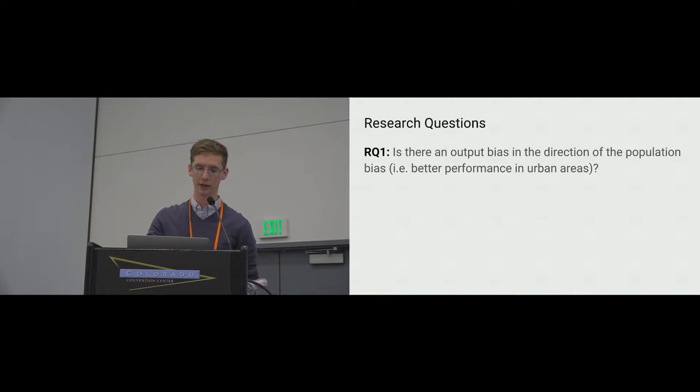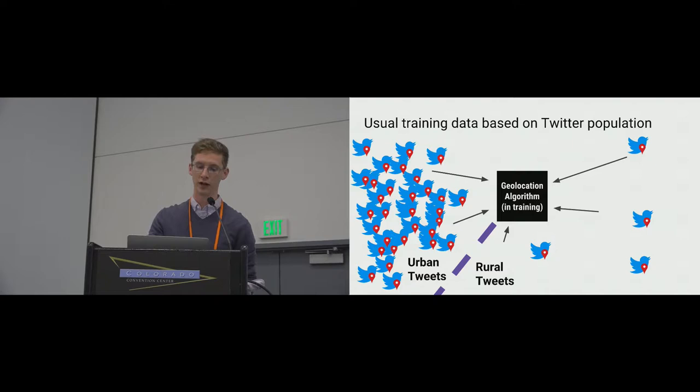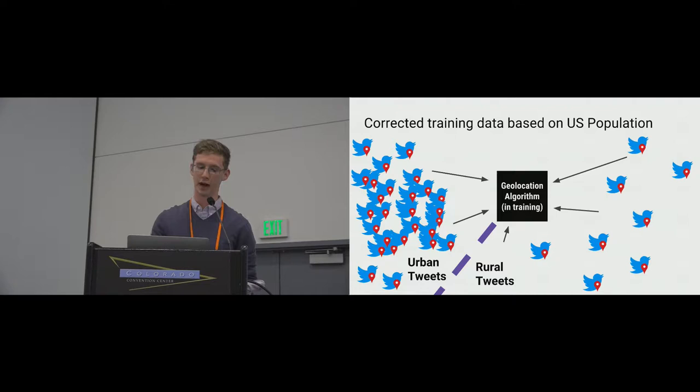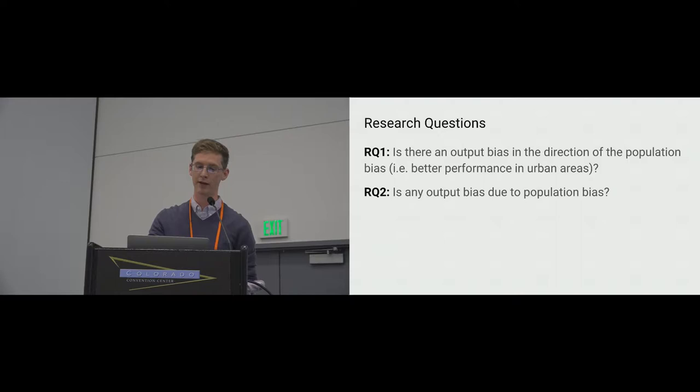That led to our first research question: is there output bias in the same direction as population bias? In other words, do geolocation inference algorithms perform better for urban tweets than they do for rural tweets? And the next obvious question is how you might fix it. What has been suggested is that if you corrected for the population bias — so instead of the data being representative of Twitter, it was representative of the U.S. population — maybe that would even out the algorithm's performance. And that led to our second research question: if you remove the population bias, does this actually correct the output bias?